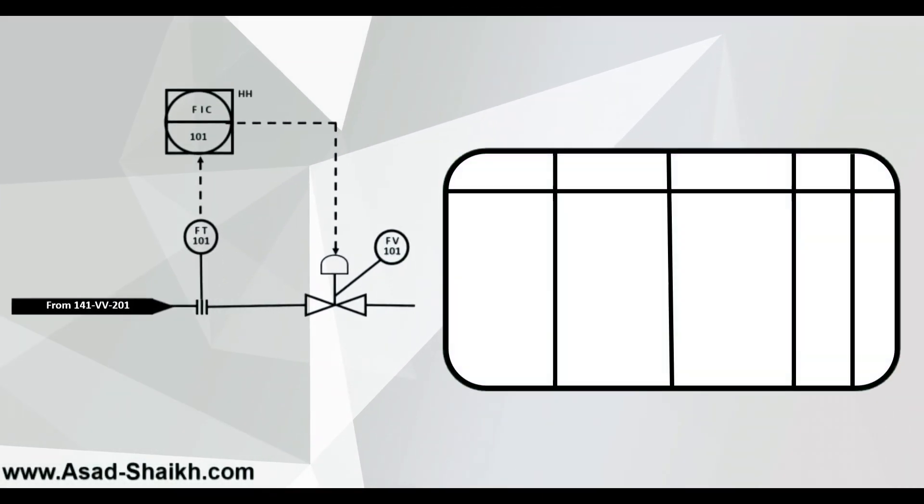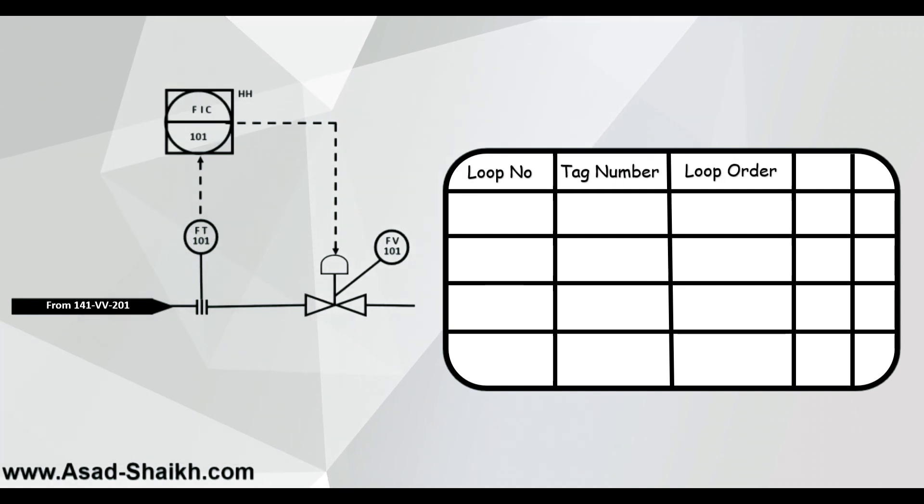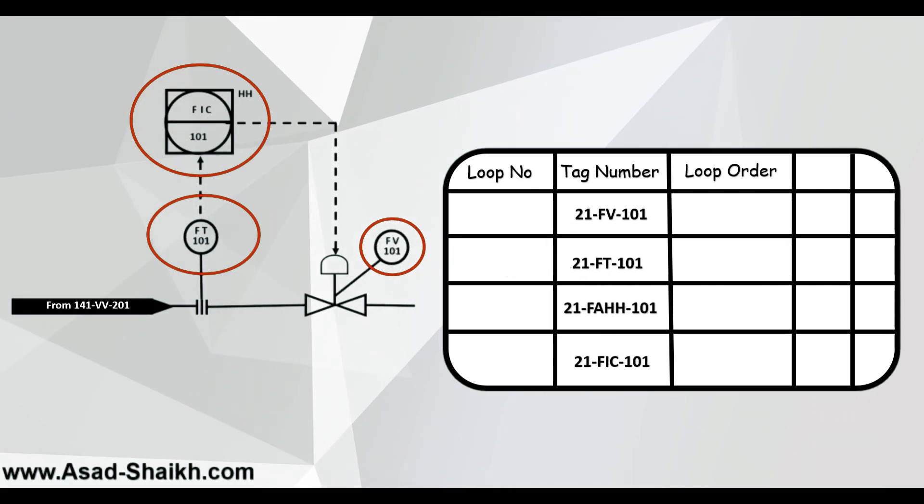Try to plot instrumentation index by seeing the three most important parameters first. You might agree that loop number and tag number are important but you might think what is so useful in loop order. So before that if you see these three are basically the tags but there's another fourth one. You see that HH written here near the controller that stands for the high high alarm. So even that has to generally be documented in an index to know what are the alarms that are available.